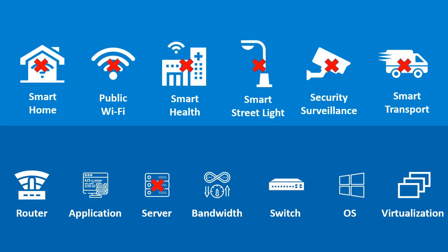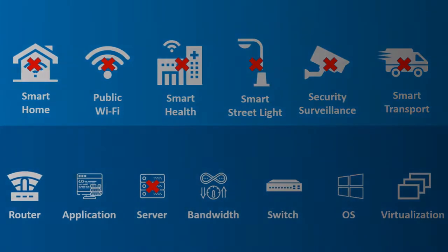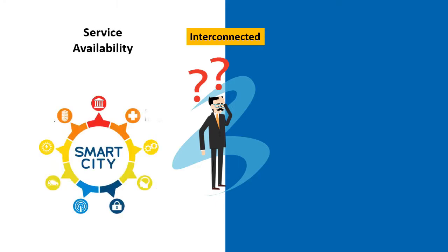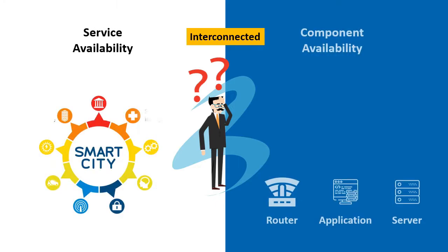So it becomes imperative for smart cities to proactively monitor their IT components. It is clear there are two interconnected levels of availability: service availability and component availability.